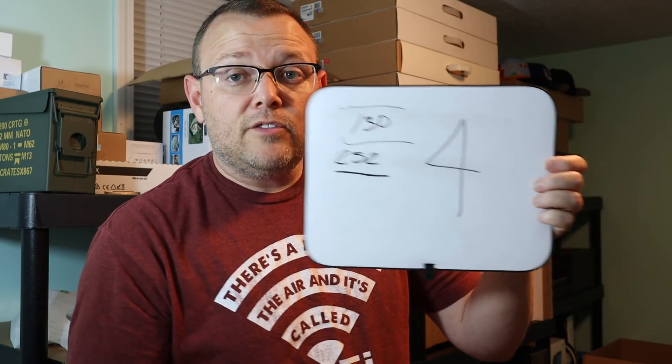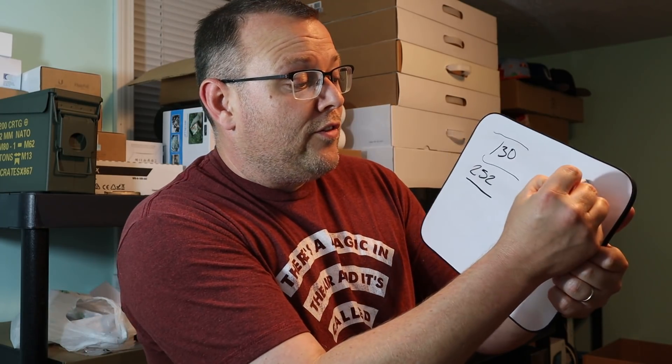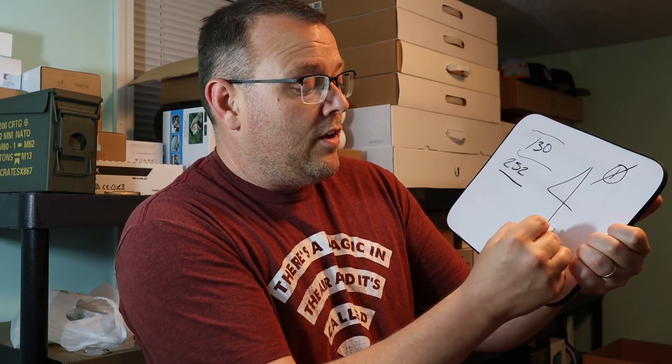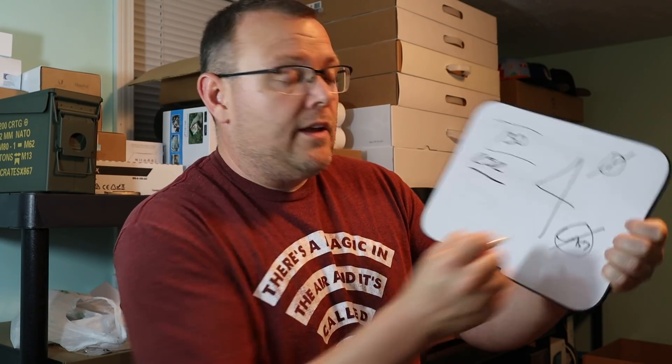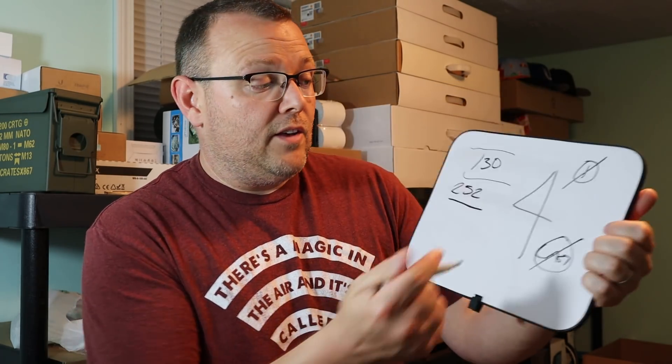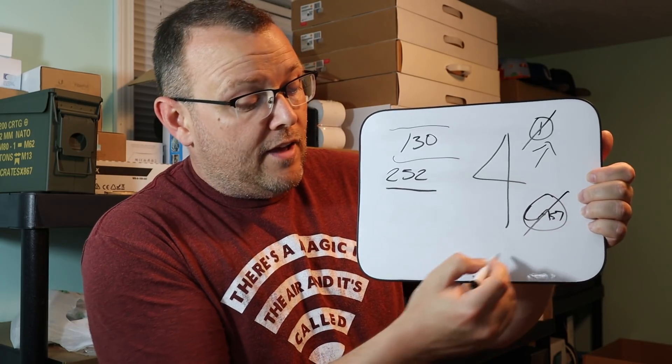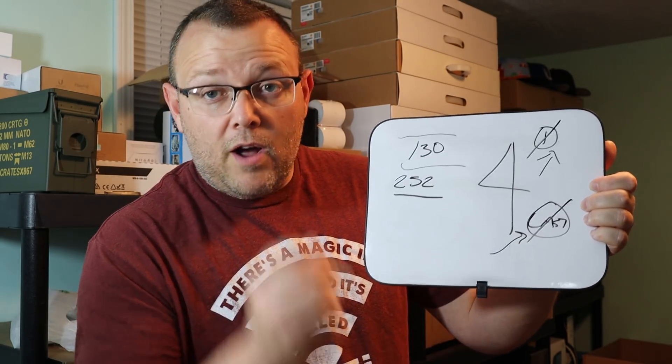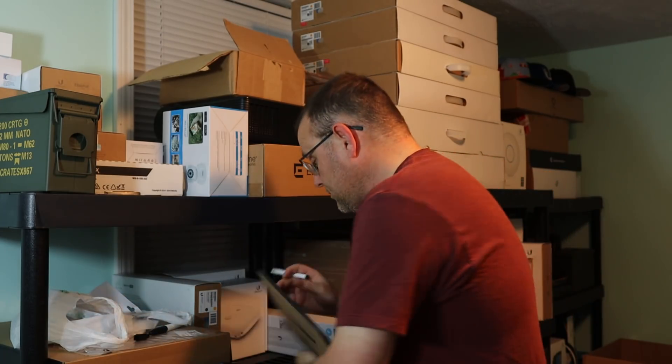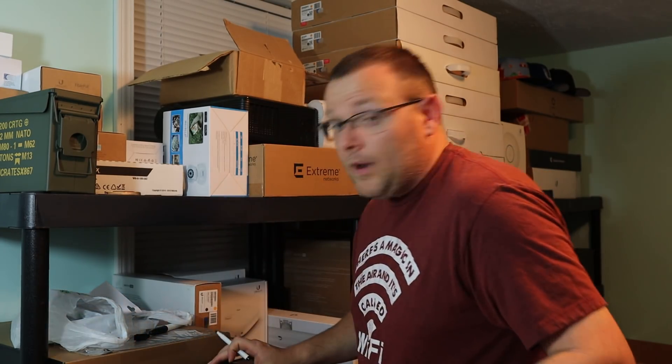A slash 30 gives us four addresses, but we can't use the first or the last — that's what we're saying — because this is the network number and this is the broadcast. However, what do you think would happen if, instead of using a slash 30, because we don't need a broadcast on a WAN point-to-point link, what do you think would happen if we use a slash 31?